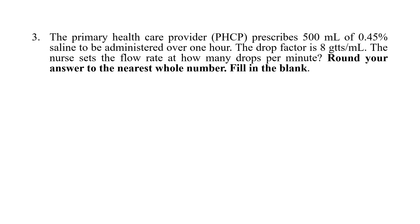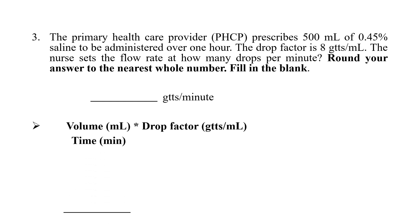For this type of question, the formula is: volume divided by time, multiplied by drop factor. Volume should always be in ml, time should always be in minutes, and drop factor will always be in gtts per ml. The prescribed volume is 500 ml — no conversion needed. Time is one hour, which equals 60 minutes. Drop factor is 8 gtts per ml.